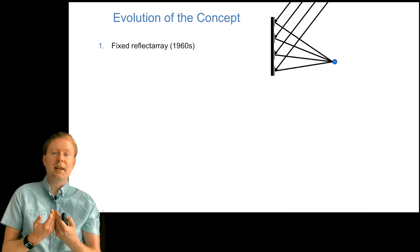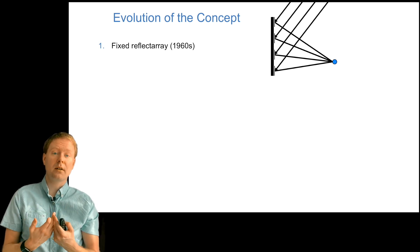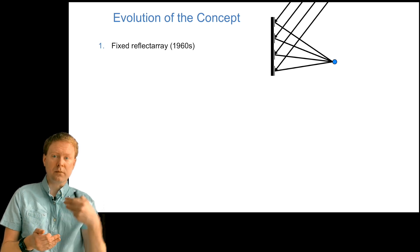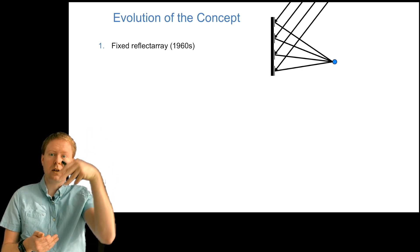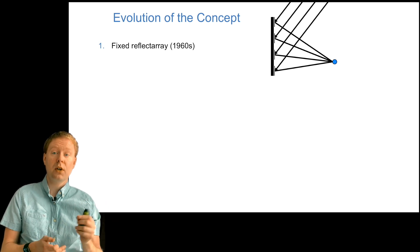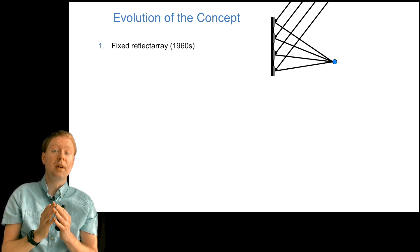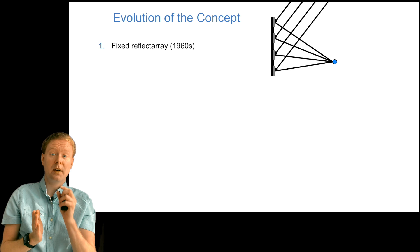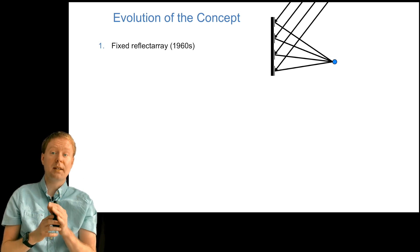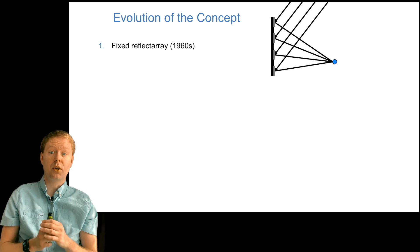From the beginning, this was used in fixed reflect arrays, which goes back to the 1960s. You can see an example here where a signal is coming in and then it gets focused on a particular point. This is a bit like a satellite receiver, but we don't have a parabolic surface. Instead we have something that is flat and divided into these different pieces, which we can control in such a way that the signal is getting focused on a particular point.